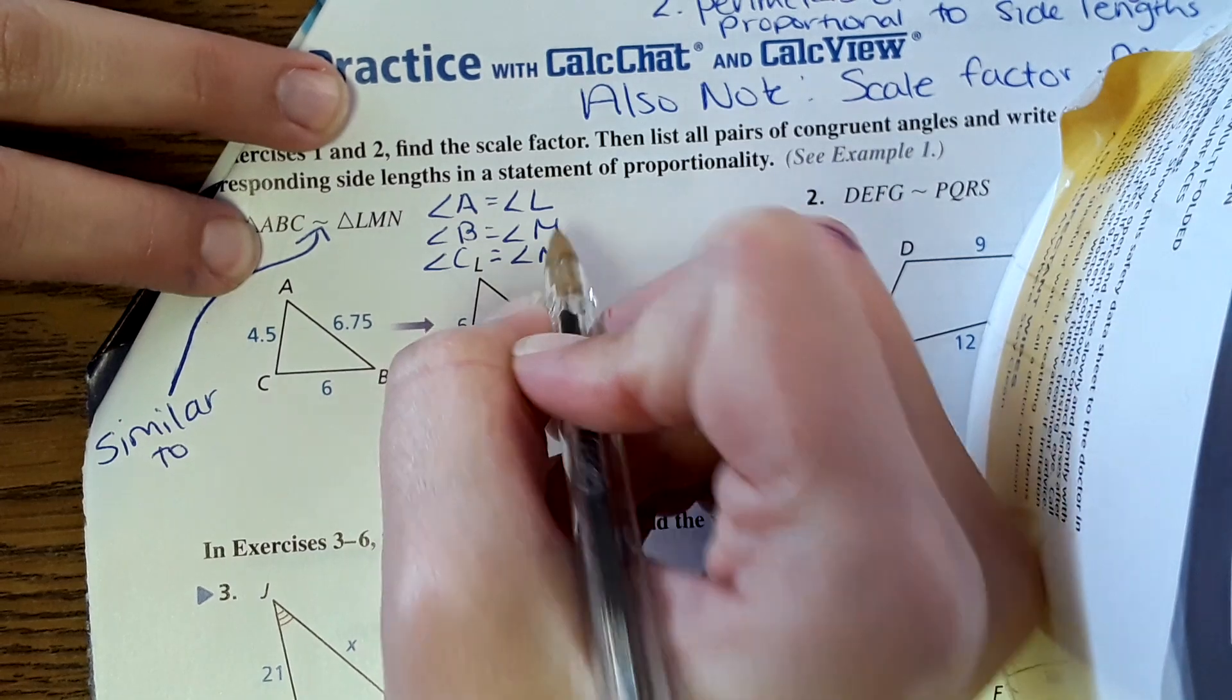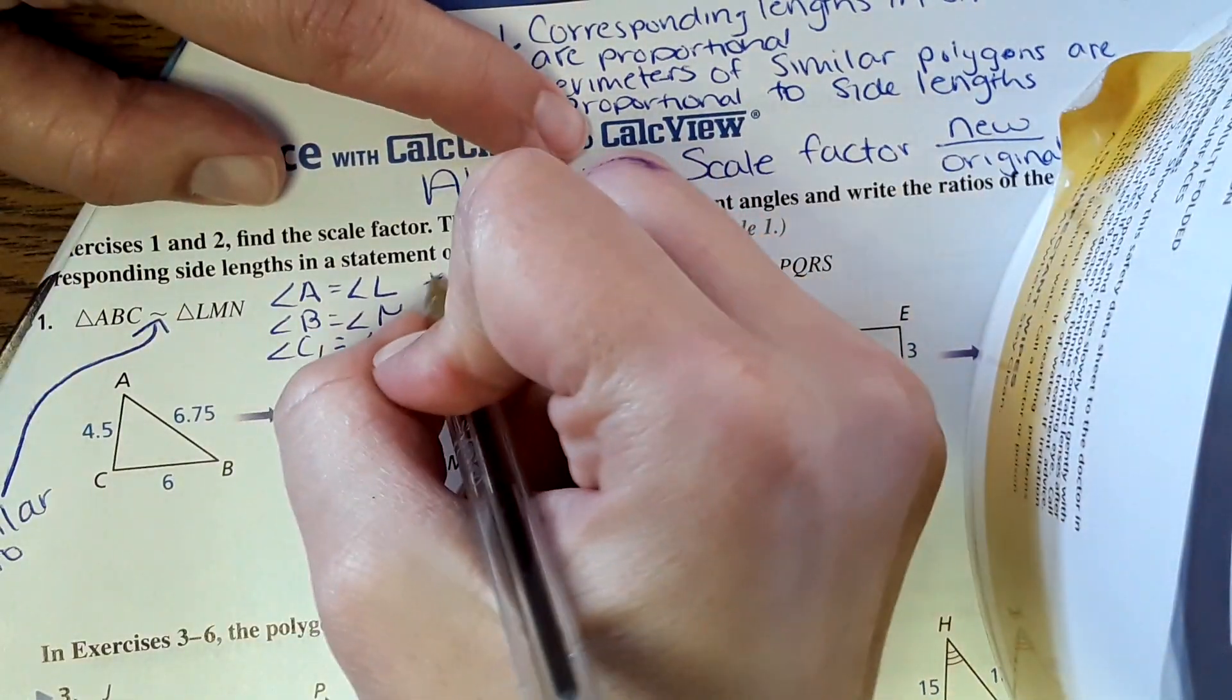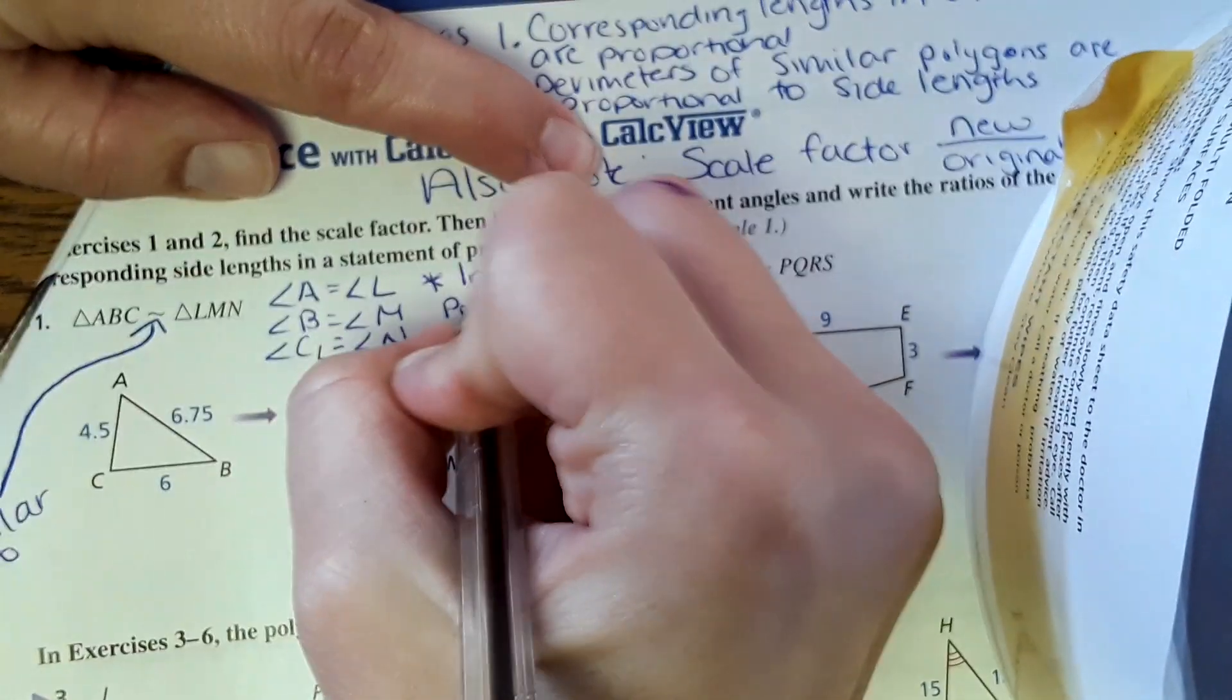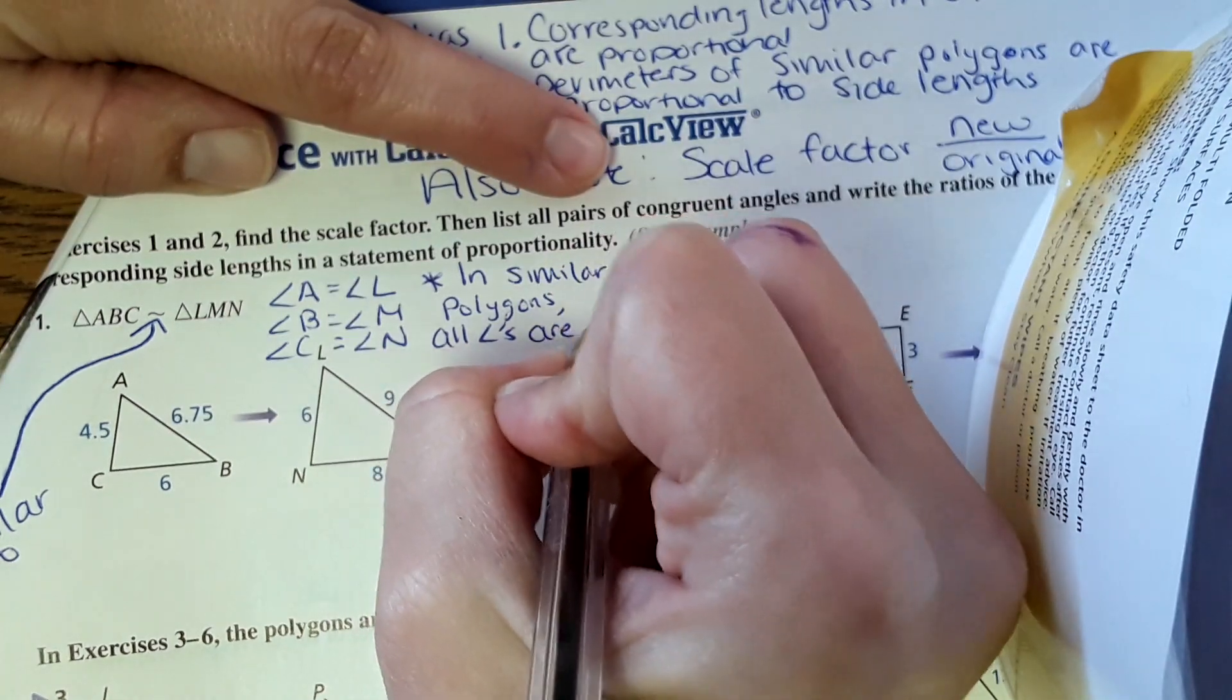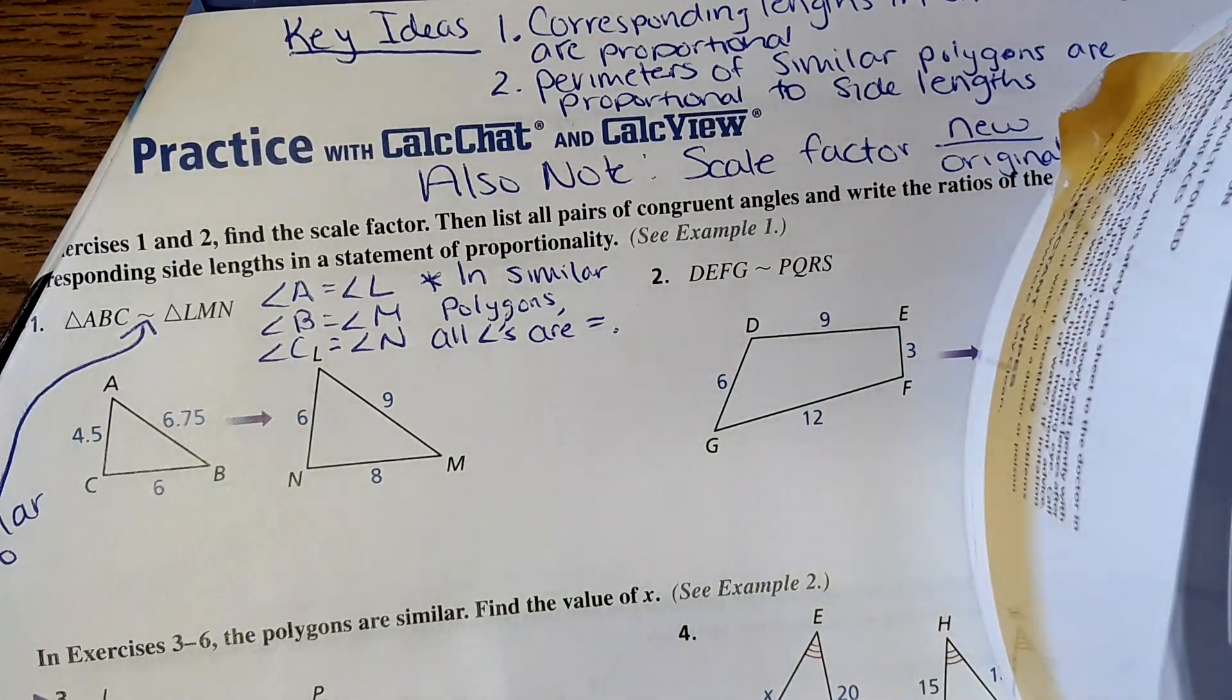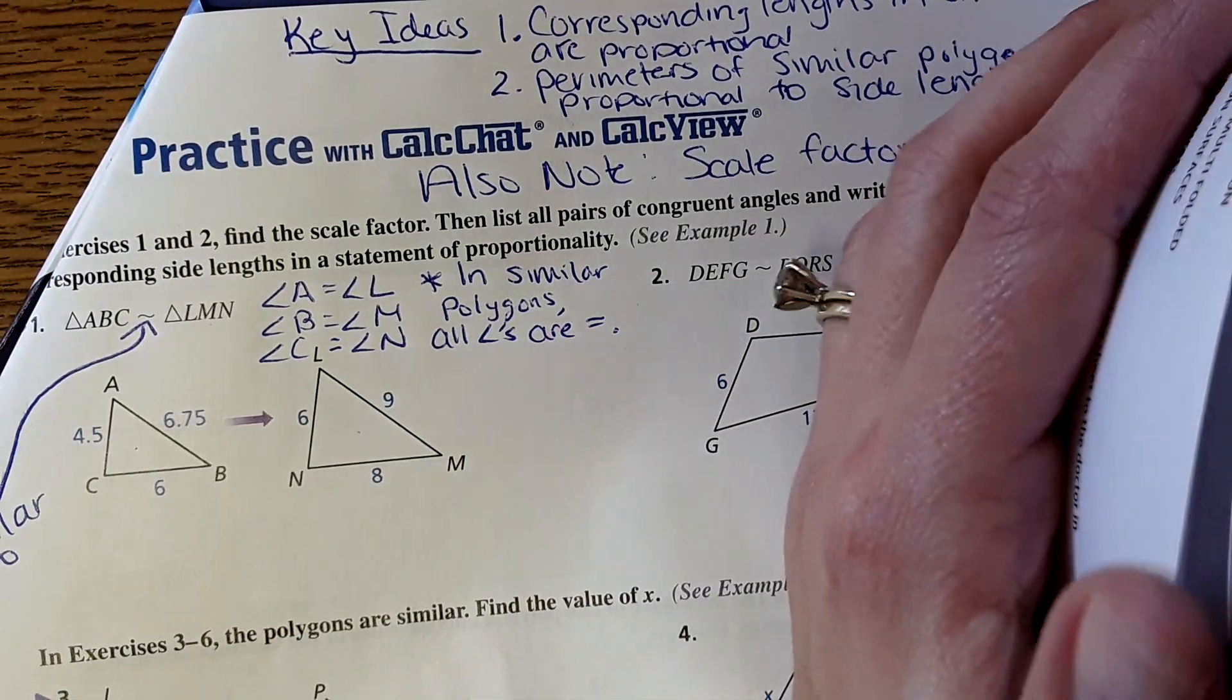In similar shapes, all the angles are equal. In similar polygons all angles are equal. In this shape and this shape, the angles would be the exact same. It's the side lengths that are different.